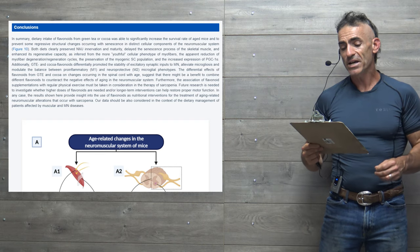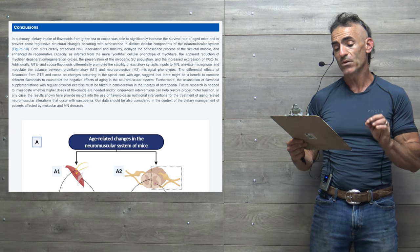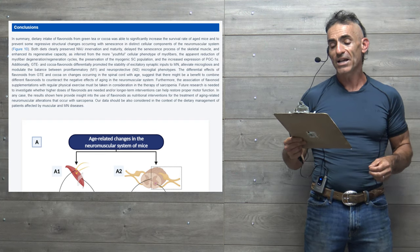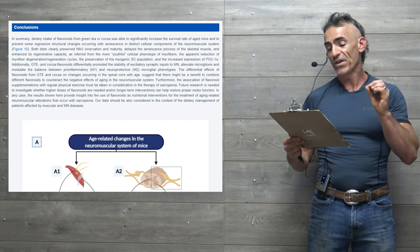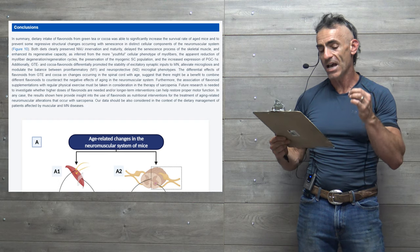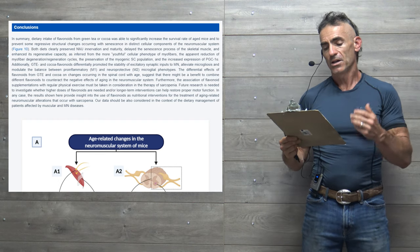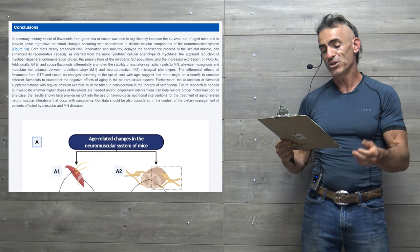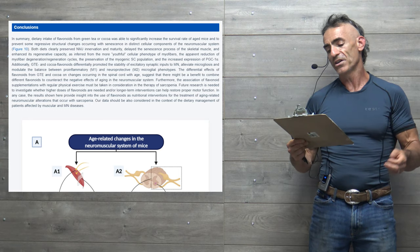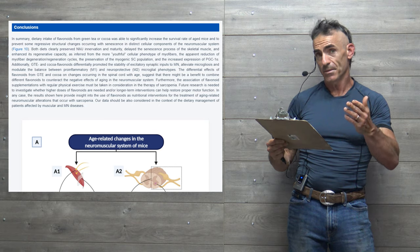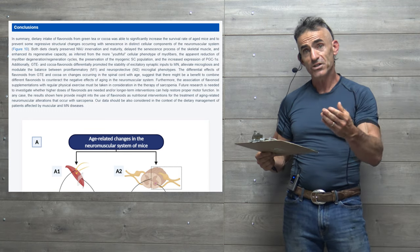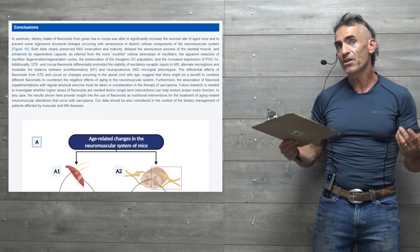In summary, dietary intake of flavonoids from green tea or cocoa is able to significantly increase the survival rate of aged mice and prevent some regressive structural changes occurring with senescence in distinct cellular components of the neuromuscular system. Both diets clearly preserved NMJ neuromuscular junctions and innervation and maturity, delayed the senescence process of the skeletal muscle and enhanced its regenerative capacity as inferred from the more youthful cellular phenotype of myofibers. Now, I'll take that back. They both operated a little differently. Cocoa flavonoids did one thing, and as you go to the full study, it'll elucidate the differences between the two.